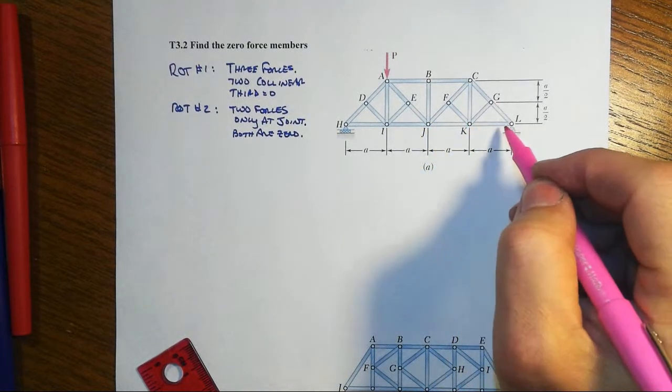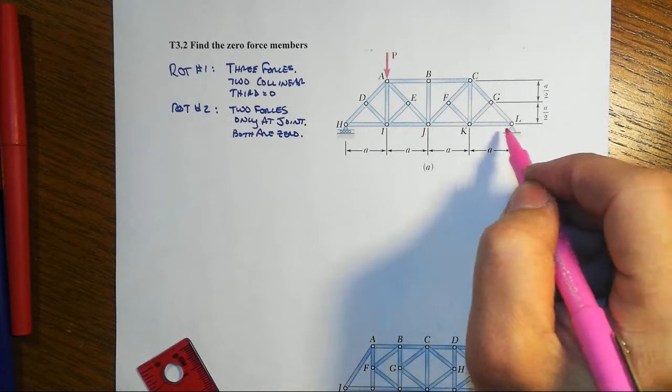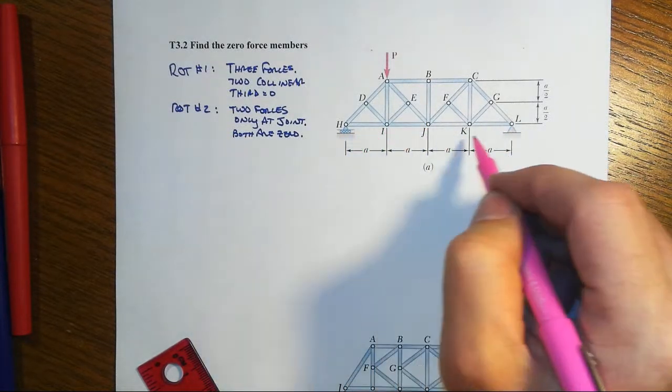K, one, two, three, four, five, nothing there. L, one, two, three but not collinear, so nothing directly associated with the bottom chord.